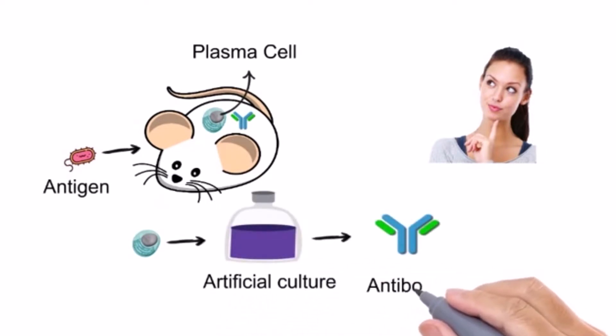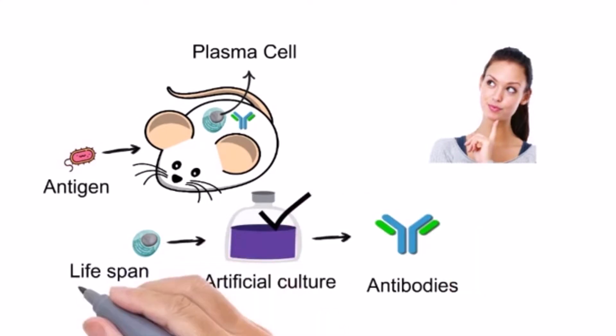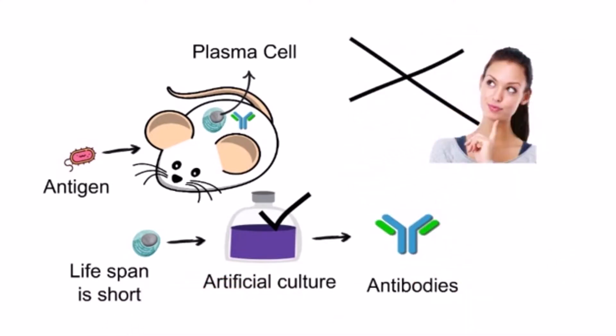The lifespan of plasma cells is from a few weeks to a few months, and that's why we cannot produce antibodies for a long time by culturing them in artificial medium. In hybridoma technology, this problem of short lifespan is overcome by fusing B lymphocytes with cancerous cells called myeloma cells. The result is artificially immortalized B lymphocytes that can grow and multiply indefinitely, producing hybridoma cells which possess the growth and multiplying properties of cancerous cells and secrete antibodies as well.